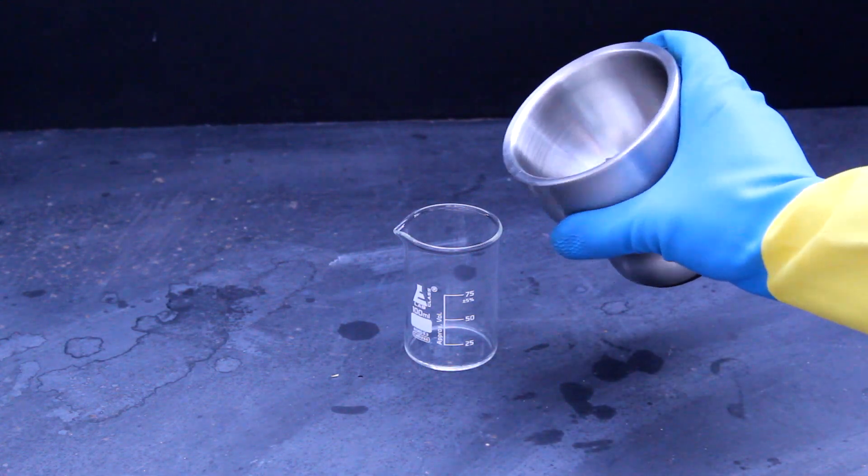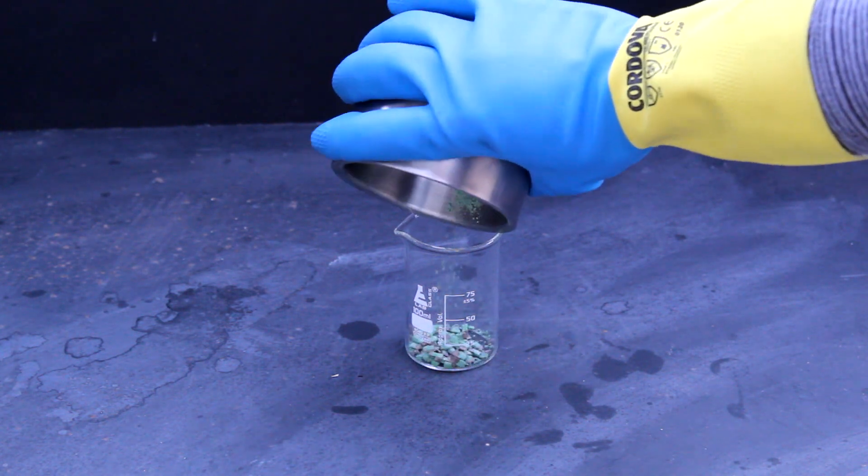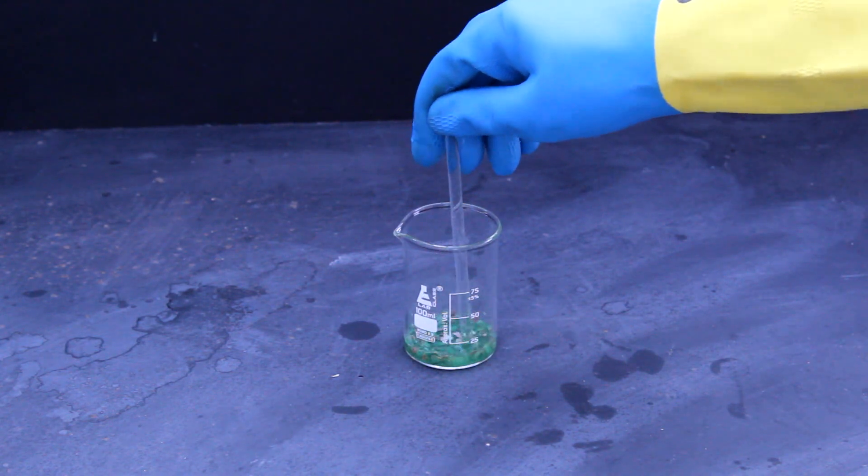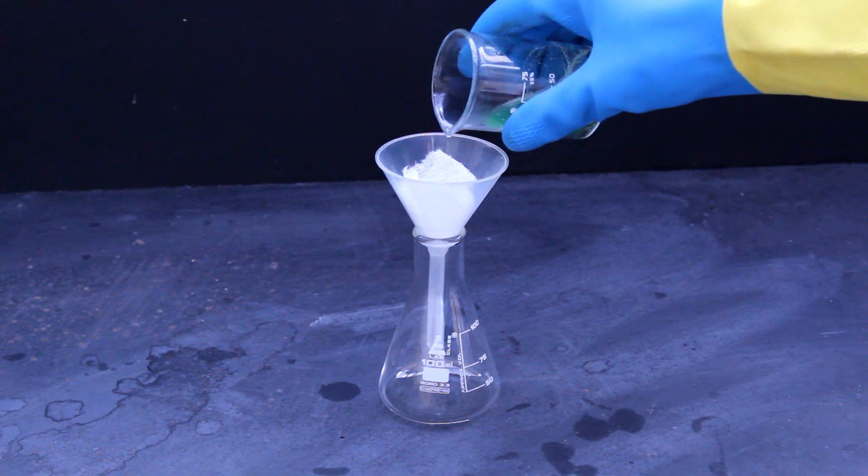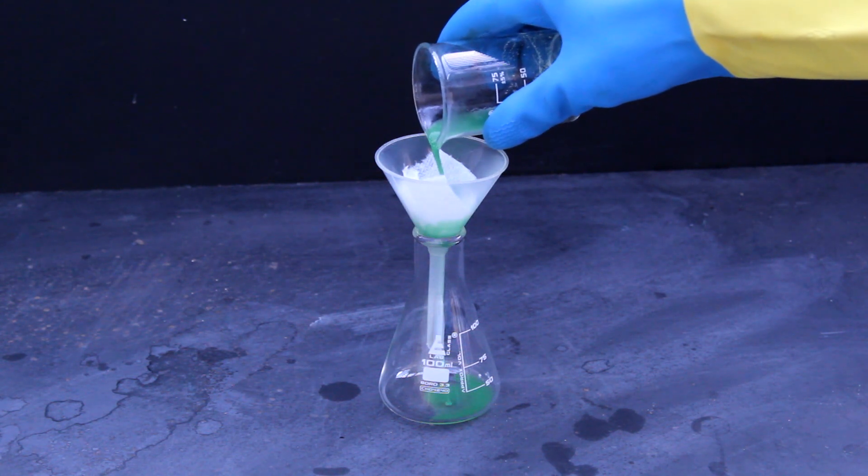Matchheads are primarily potassium chlorate, which can be easily extracted by cutting off the matchheads and boiling them in water for a few minutes. It's important to use boiling water because potassium chlorate is hundreds of times more soluble when hot. You can then filter off the insoluble junk and keep the liquid, which contains most of the chlorates along with whatever dyes are in the matchheads.